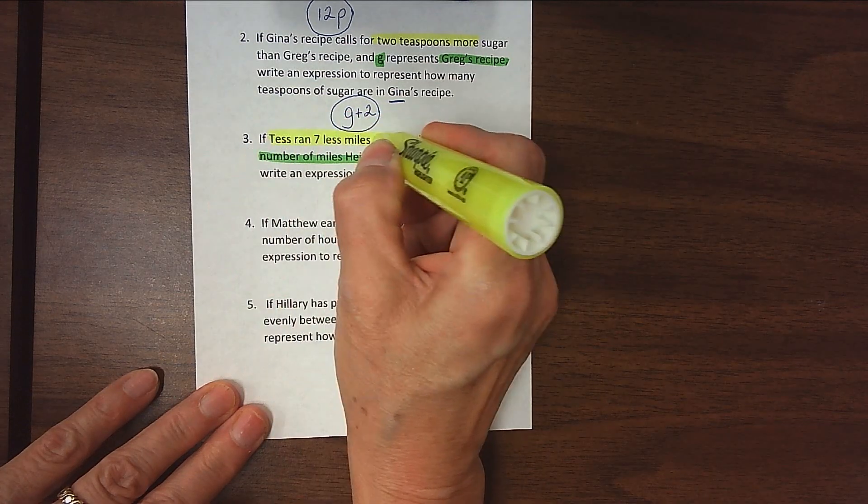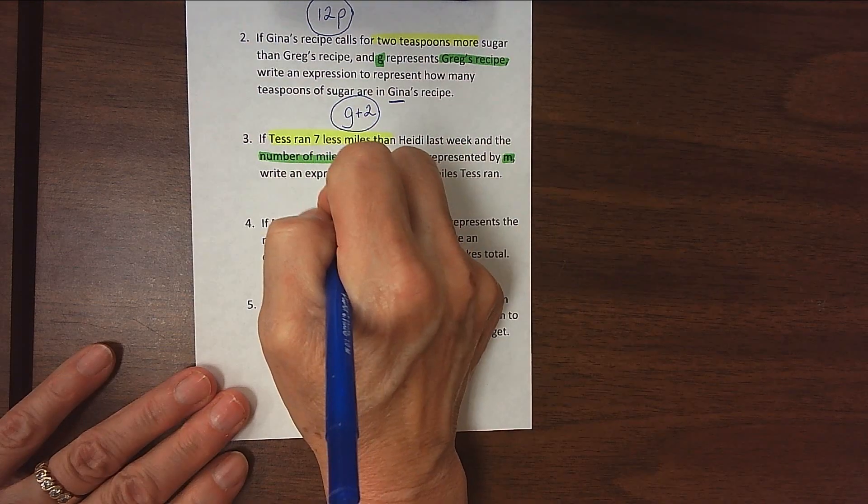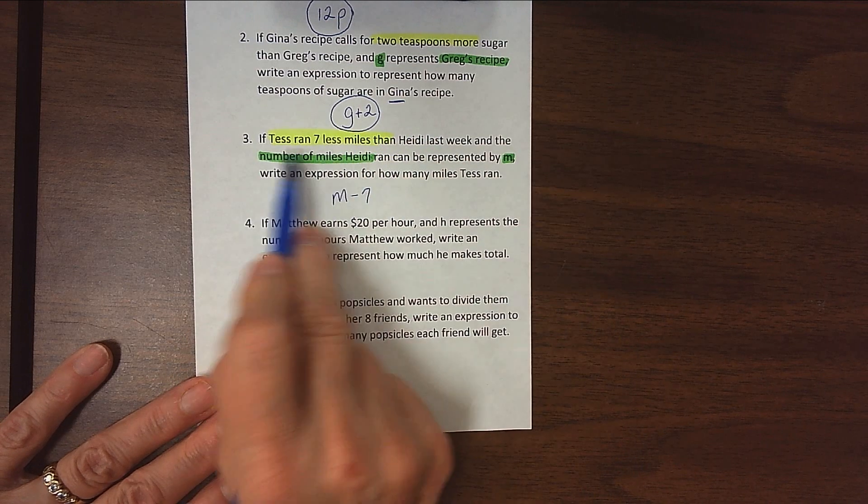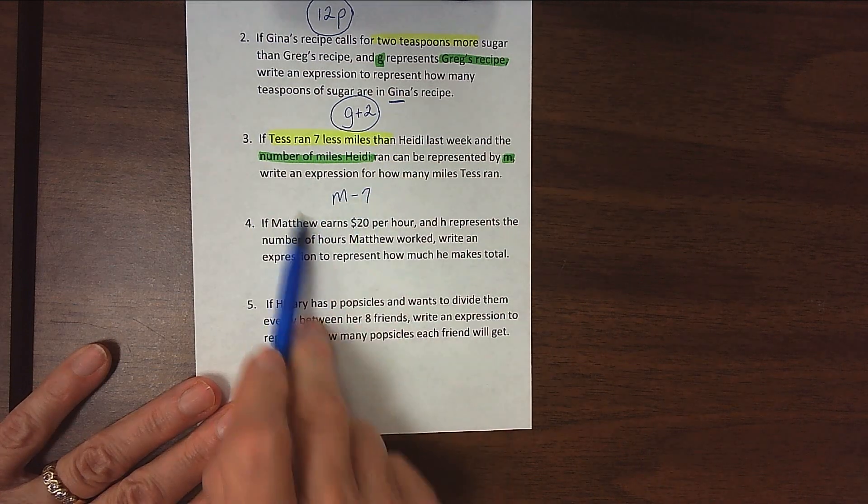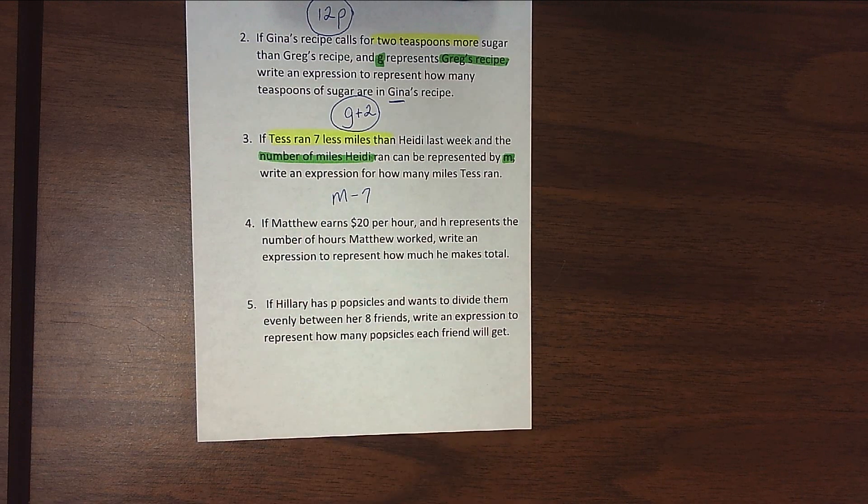And we know that Tess ran seven less than Heidi, and we subtract seven, the seven less that Tess ran, then we will know how many Tess ran. So Heidi's miles minus seven gives us Tess's miles.